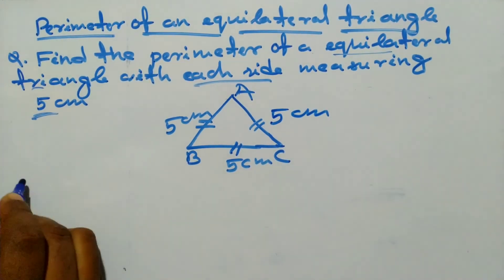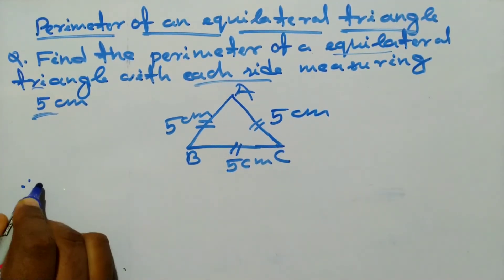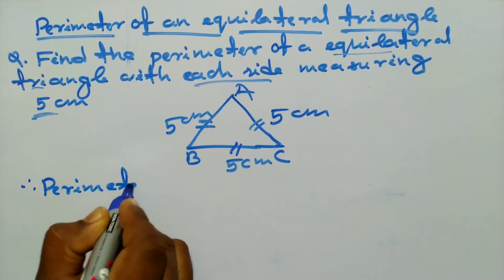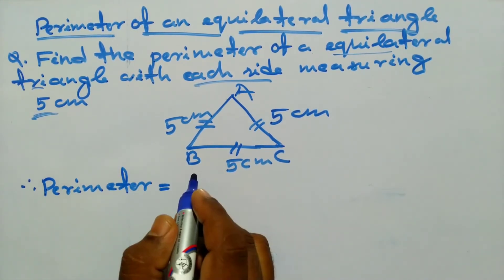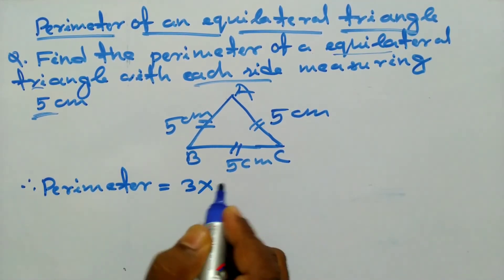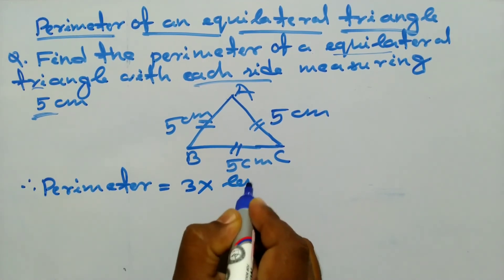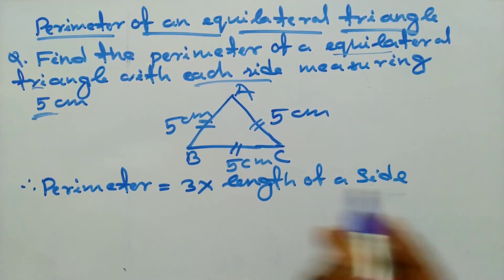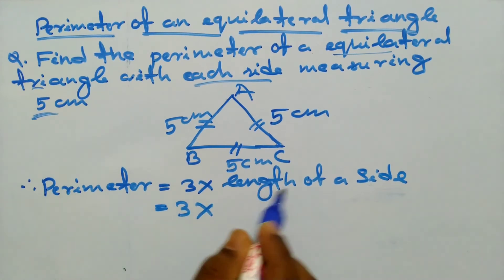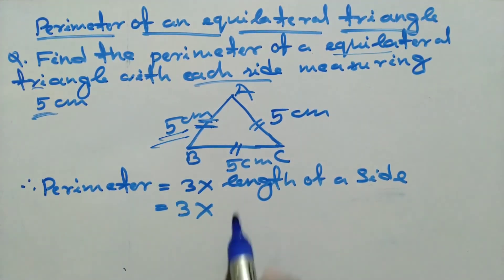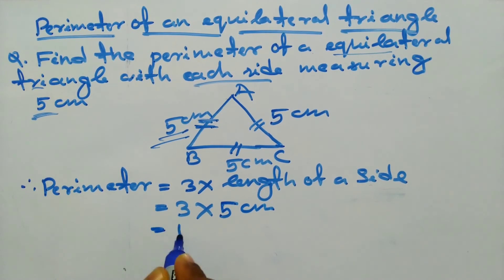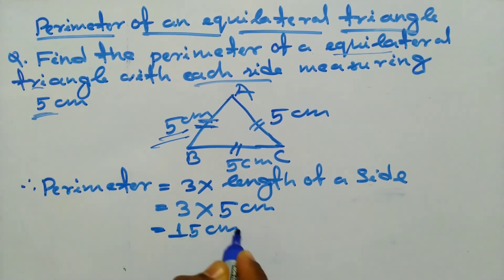Applying the formula: 3 × length of one side = 3 × 5 centimeters = 15 centimeters. This is the answer.